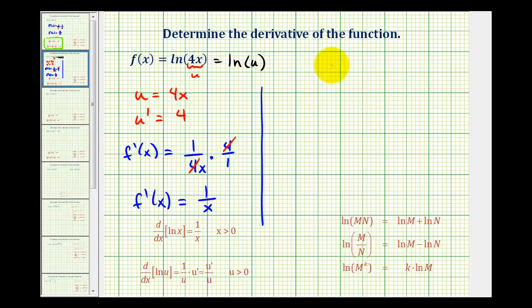If we start with the original function f(x) equals natural log 4x, we could write 4x as 4 times x, which should remind us that we could apply a property of logarithms to rewrite this log as a sum of 2 logs, and that property is given here below. So we could write f(x) equals natural log 4 plus natural log x.